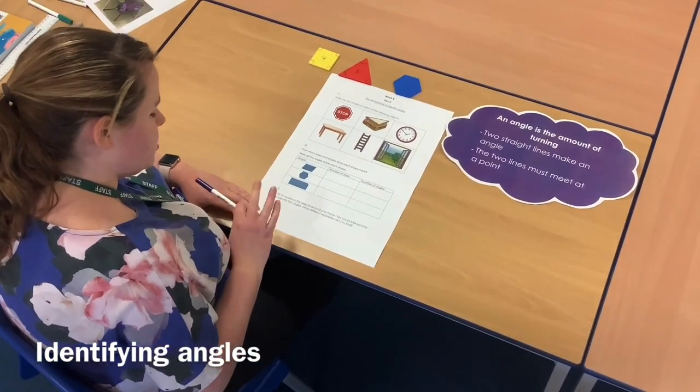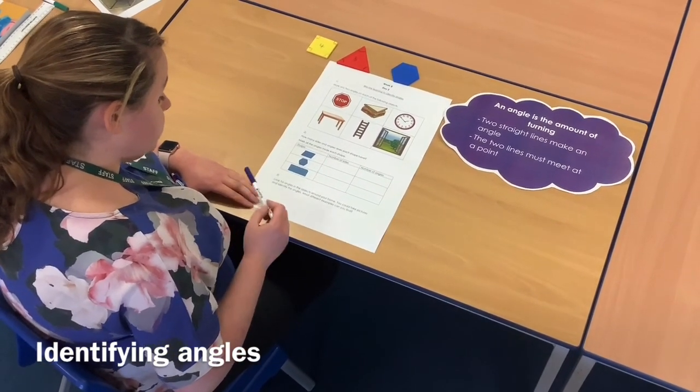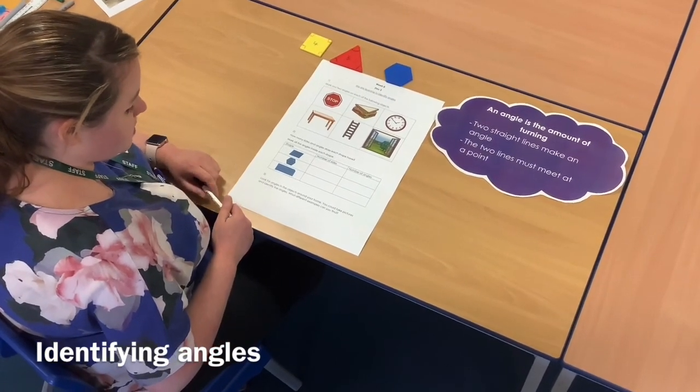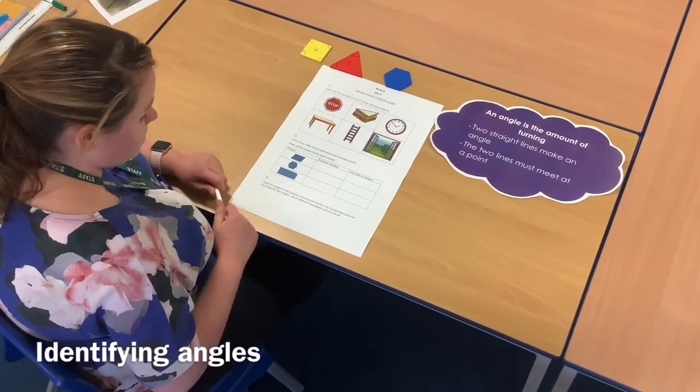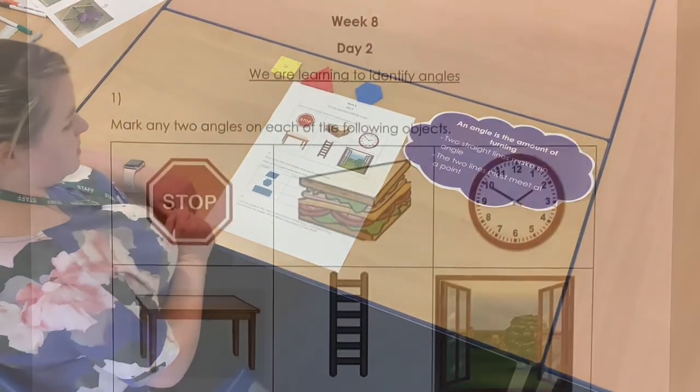And then question number three is just an optional one if you'd like to have a go at, is for you to look for some angles in your home. So you could possibly take some pictures to identify the angles. And what different examples can you find? Good luck and I'll see you tomorrow.